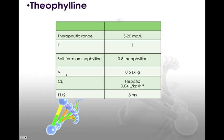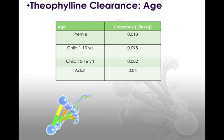Volume of distribution of theophylline is about 0.5 liters per kilogram — that's less than total body water, so it's a relatively small volume of distribution. Clearance is about 0.04 liters per kilogram per hour, but this varies a whole lot. Half-life is about 8 hours — if clearance is variable, so is the half-life. About 8 hours is a reasonable way to think about theophylline, so you're dosing two to three times a day.